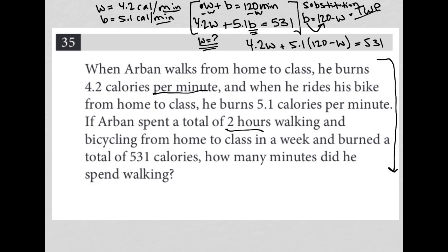So now all that I have left is to simplify this. I'm going to bring this down where I have more space. So 4.2W, if I distribute this here, let me see, pull up my calculator. 5.1 times 120 is, let me just do that, 5.1 times 120 is 612. So I get, so 4.2W plus 612 minus, distribute that, 5.1W equals 531.